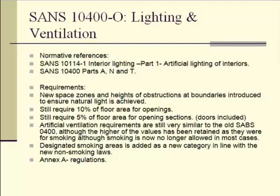New space zones and heights of obstructions and boundaries have been introduced to ensure natural light is achieved. It's all very well having windows on your building, but you need to be aware of the context — it's about being able to get external light into the building and minimise the impact of having to have daylighting. You need to be sure you're not affected by your neighbours or columns in front of windows. In terms of the 10% floor area and 5% openings for minimum light and ventilation, you must make sure nothing is in the way, and if there is, the window obviously needs to be a little bit bigger.